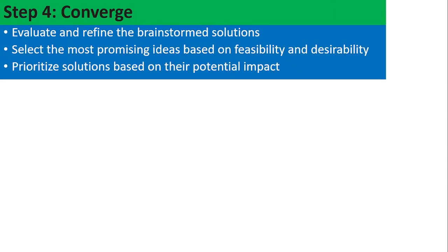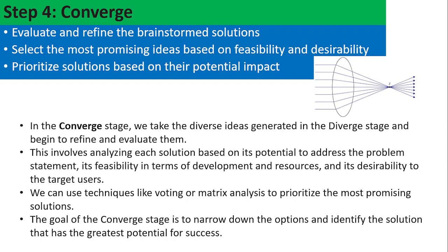The fourth step is Converge. In Converge, you evaluate and refine the brainstormed solutions and select the most promising ideas based on feasibility and desirability. We take the diverse ideas generated in the Diverge stage and begin to refine and evaluate them, analyzing each solution based on its potential to address the problem statement. We can use techniques like voting or metrics analysis to prioritize the most promising solutions.